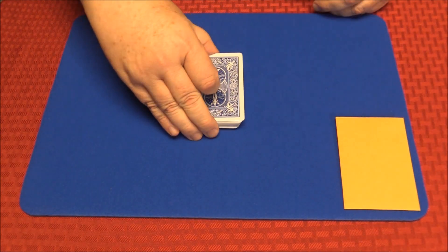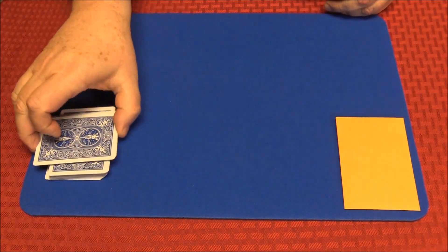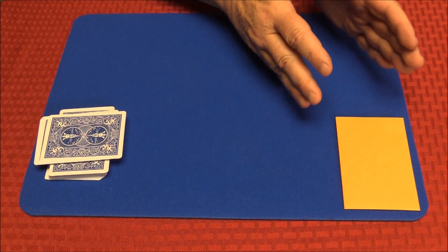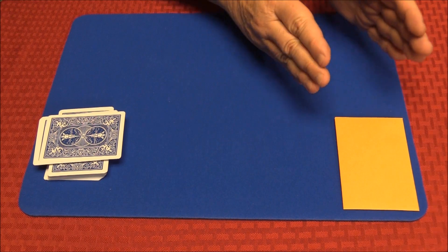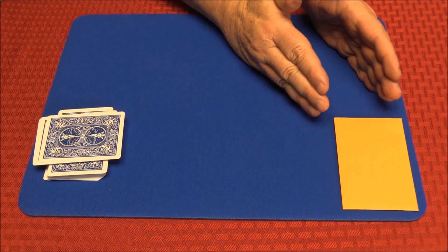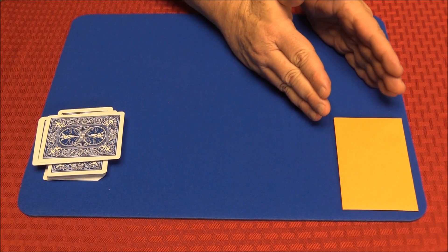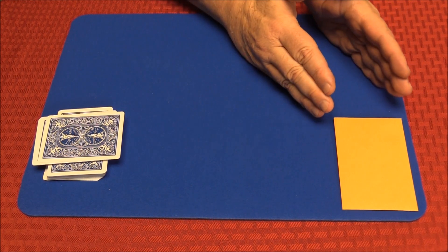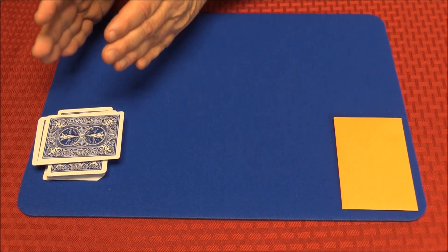We're going to come over here to the envelope. In the envelope, I've got a prediction. It's going to be half of the value of the same suit as the card we've cut to.